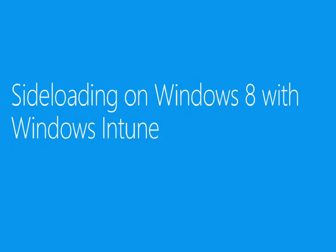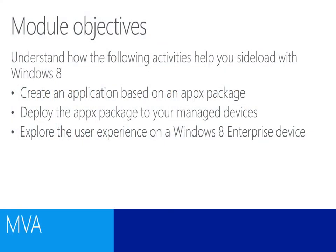Welcome to this module of the Windows 8 Line of Business App Deployment course. In this module we're going to be looking at sideloading an application onto a Windows 8 device using Windows Intune as our deployment mechanism. The objectives are to get you ready to use Windows Intune to sideload an application onto a target device.